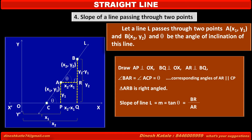This is equal to y2 minus y1, which is the value of BR, upon x2 minus x1, the value of AR. Thus if the given points are A(x1, y1) and B(x2, y2), then the slope of line AB, or slope of line L, is equal to y2 minus y1 upon x2 minus x1.